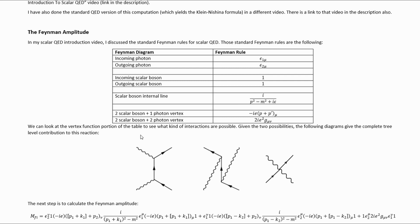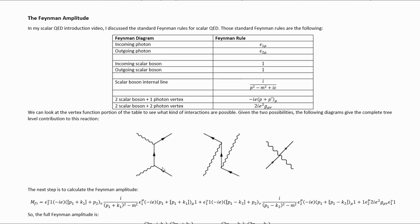We can look at the vertex function portion of the table and see what kind of interactions are possible. Given the two possibilities, the following diagrams give the complete tree level contribution to the reaction. We have these two reactions that are familiar from Compton scattering and normal QED, but that extra interaction term in the scalar QED Lagrangian causes there to be a third diagram at tree level for scalar QED.